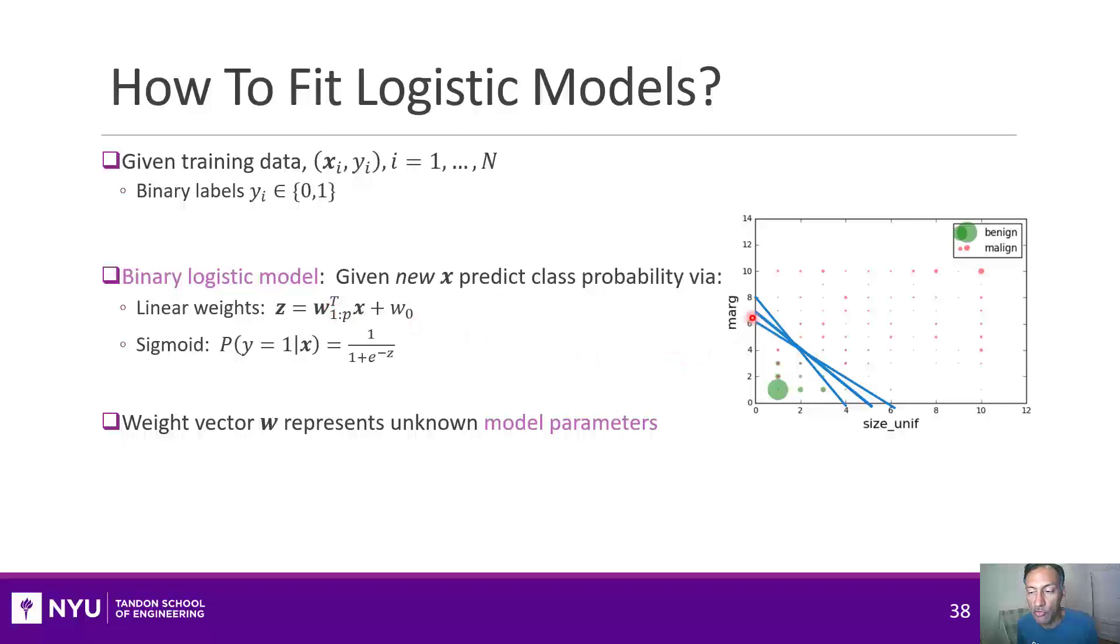When you look at that model, it has some unknown parameters, which are the vector of coefficients w. So you could graphically represent that w as shown here. When you see this, you can see that there are a lot of different possible w's that seem reasonable for partitioning these green circles from the red ones. And the question is, how do we select the correct w?